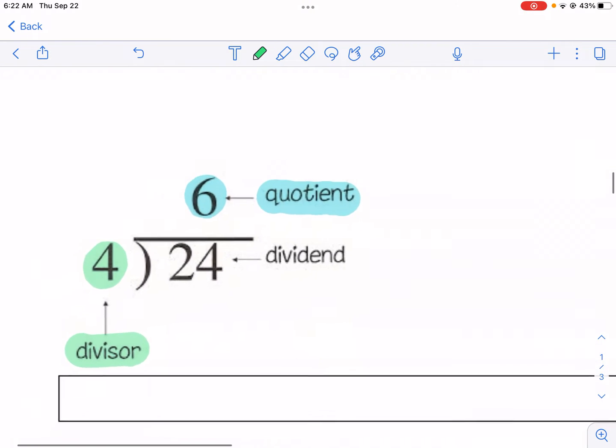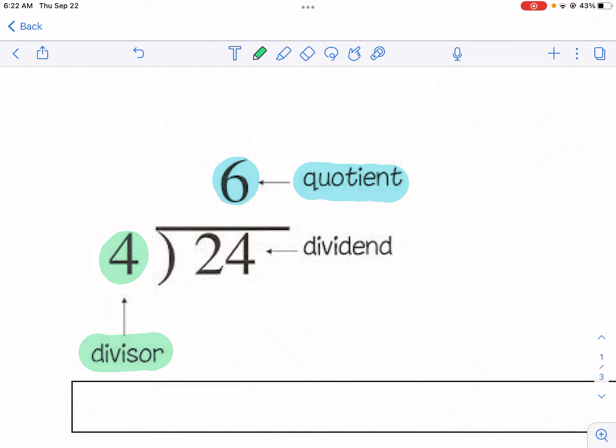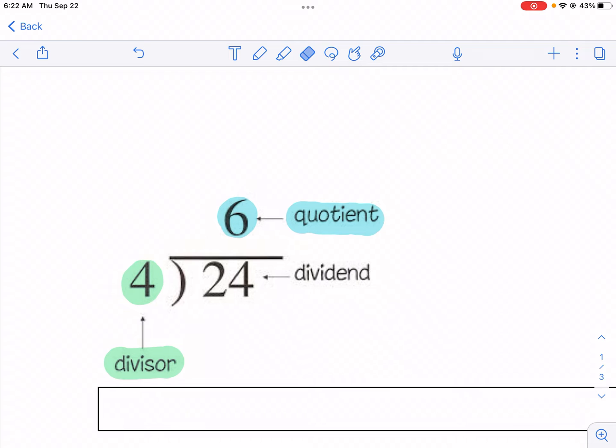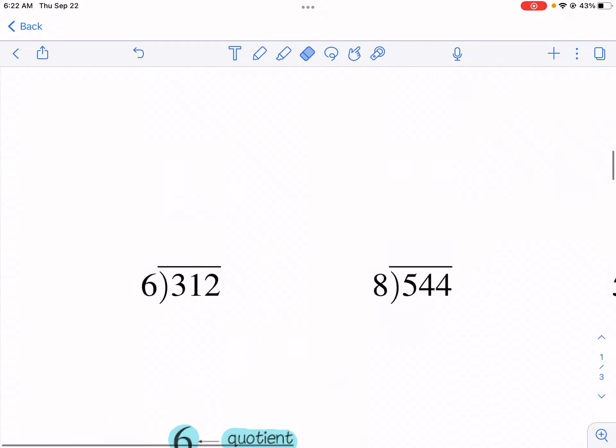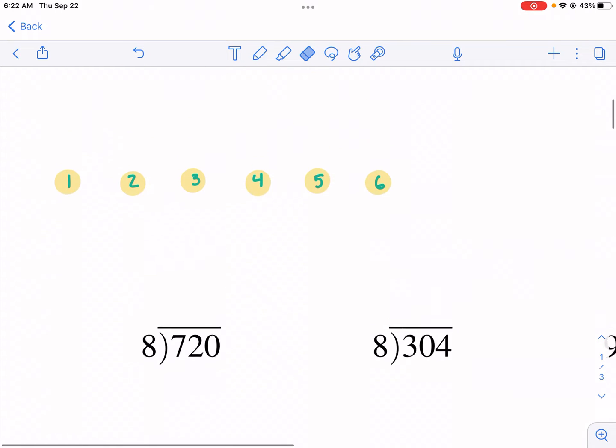Some basic vocab you'll need to know. This is quotient, this number right here, divisor is outside, and the one inside the divide symbol, which I call the house at times just for shorthand, is the dividend. So really what we're looking for is the quotient for these and I'm going to talk about what that means right now with number one.